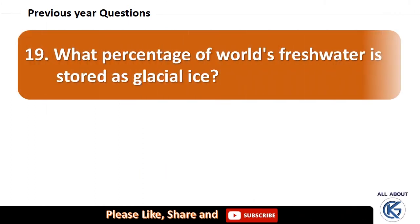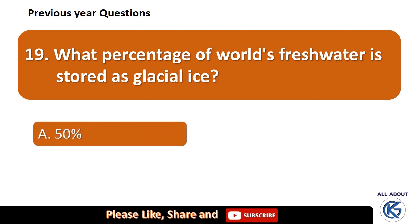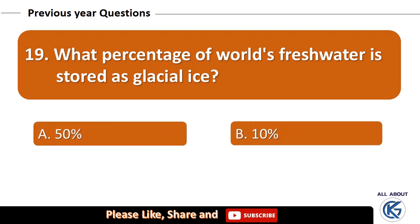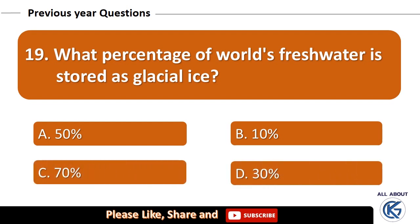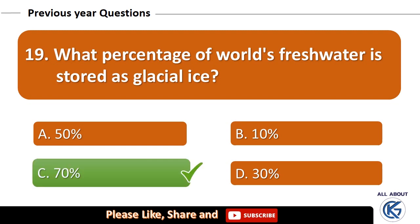What percentage of world's fresh water is stored as glacial ice? 50%, 10%, 70%, or 30%? The right answer is 70%.